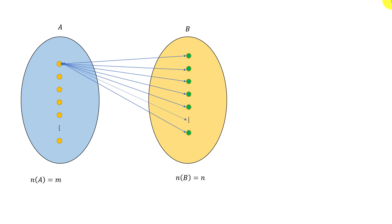Let A and B be two finite sets having m and n elements respectively. Then each element of set A can be associated to any one of n elements of set B, so the total number of functions from set A to B is equal to the number of ways of doing m jobs where each job can be done in n ways.